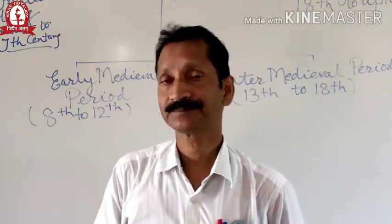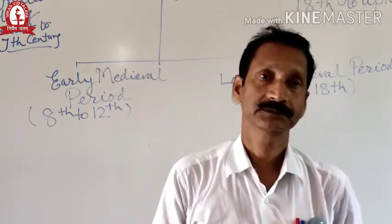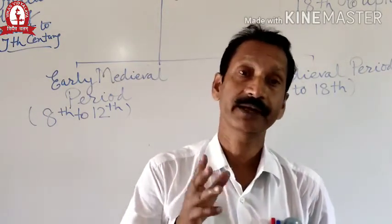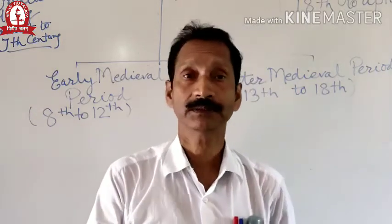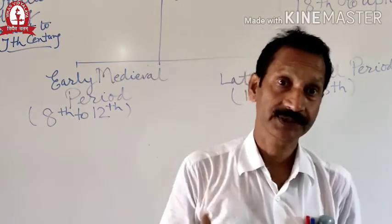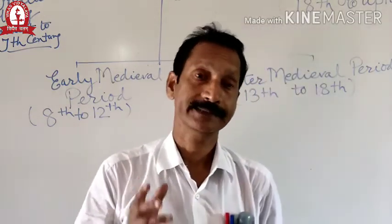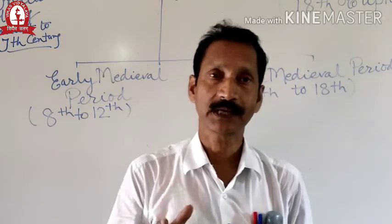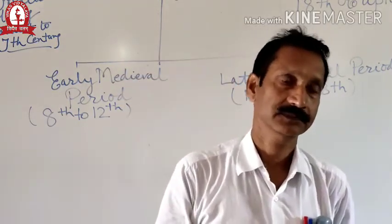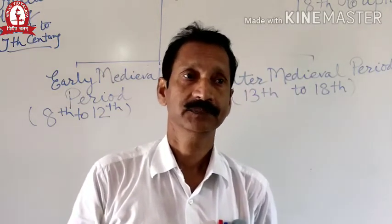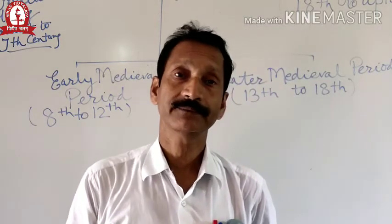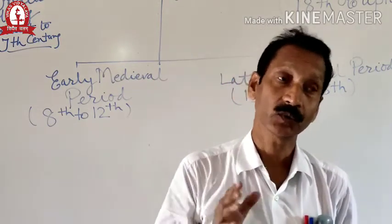You know that the first Muslim invader, Muhammad bin Qasim of Persia, attacked the ruler of Punjab. The king's name was Dahir. He defeated Dahir. Muhammad bin Qasim was just 17 years old.